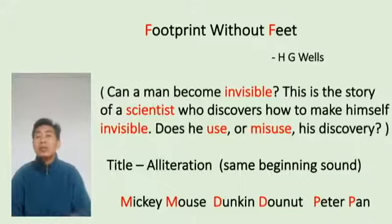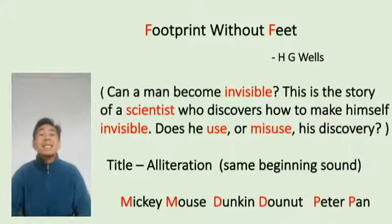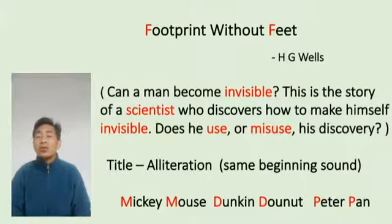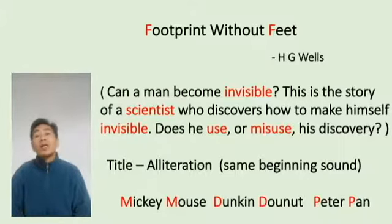Now look at the title of the story — 'Footprints Without Feet.' Two letters are highlighted in red. Do you remember the literary device we discussed in class? If you look carefully, you will know that alliteration is used. Alliteration is a literary device by which we repeat the beginning sound. For example, Mickey Mouse, Donald Duck, Peter Pan — and similarly, the title 'Footprints Without Feet' also uses alliteration.